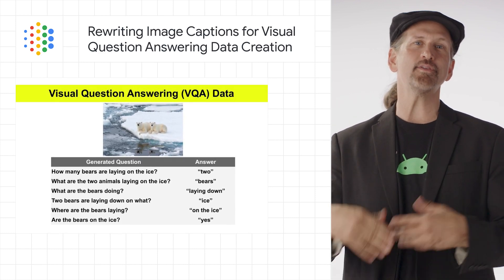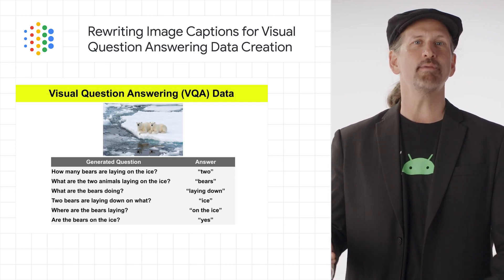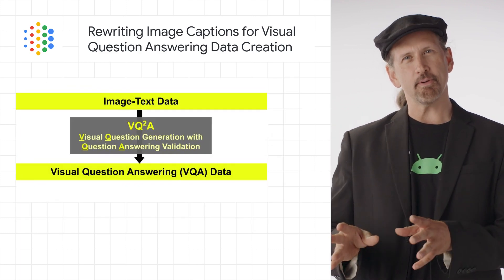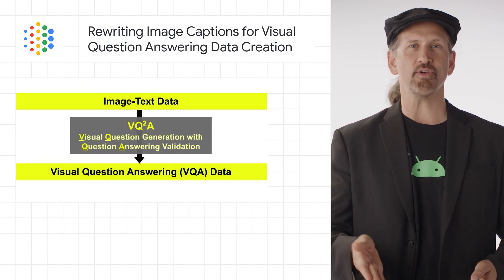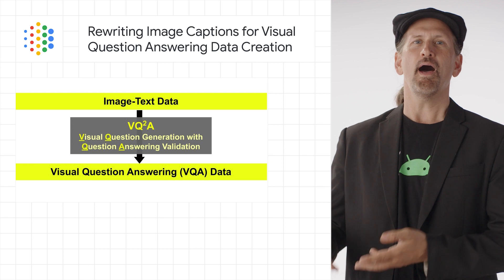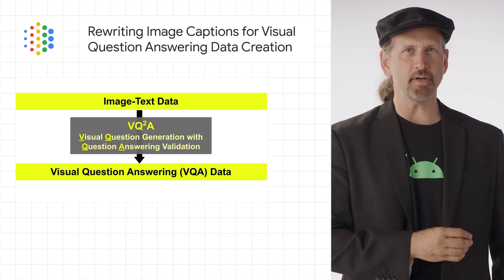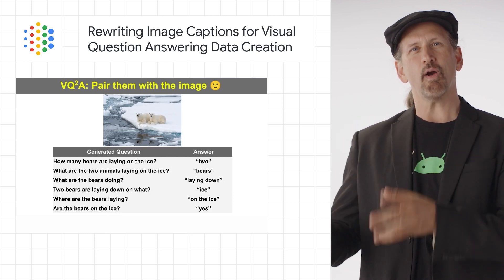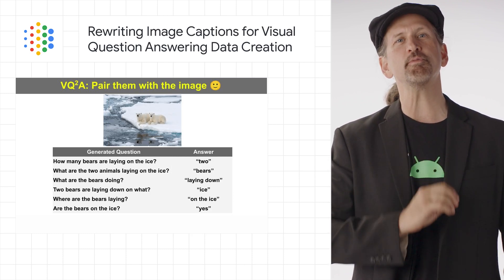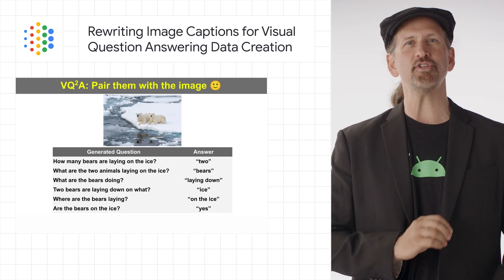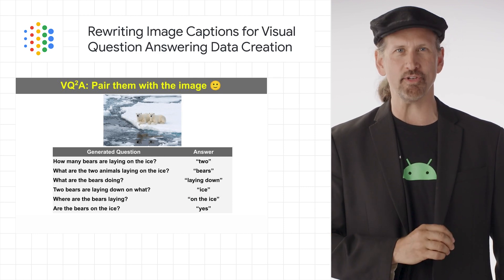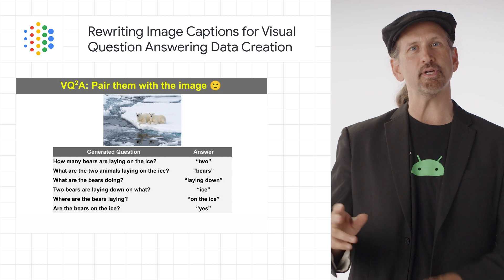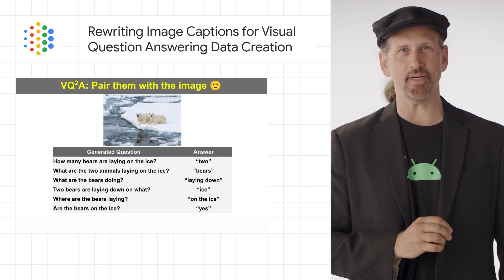Its applications include assisting the blind and visually impaired, communicating with robots, or enhancing the user's visual experience with external knowledge. The paper discusses visual question generation with question answering validation — a pipeline that rewrites a declarative caption into multiple interrogative question-answer pairs, leveraging large-scale image-text data and large-capacity neural text-to-text models to achieve automatic VQA data generation at scale.